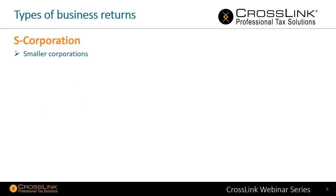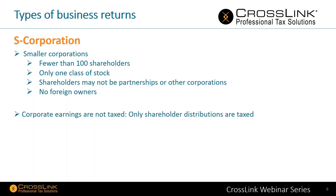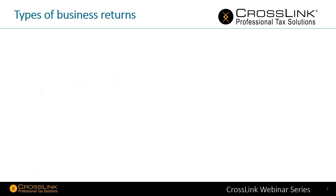S-Corps are smaller corporations with specific guidelines: fewer than 100 shareholders, only one class of stock, shareholders may not be partnerships or other corporations, and there can be no foreign owners. Corporate earnings are not taxed — only shareholder distributions are taxed — and income is reported to shareholders on Schedule K1. These are done on Form 1120S, due the 15th day of the third month of the tax year.